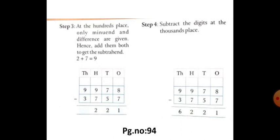So in hundred's place, they have given minuend and the difference are given. So that is 2 plus 7. So 2 plus 7 is 9.